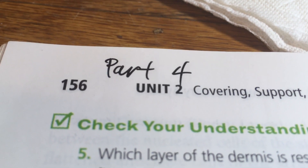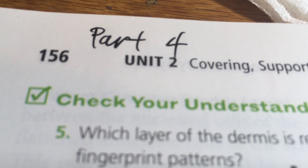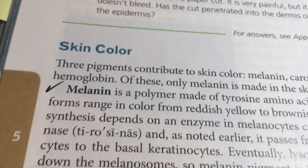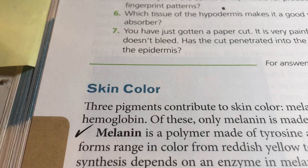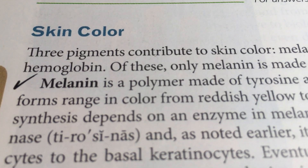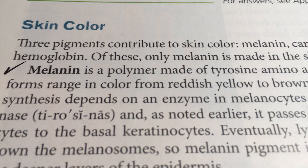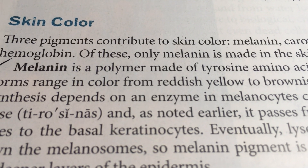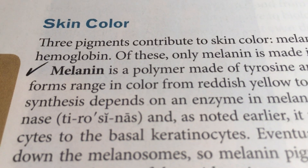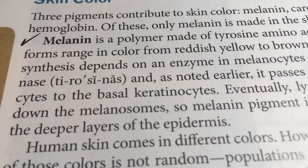Here we are, it's part four and it's page 156. We're continuing on with the integumentary system, the skin, and some of the features of the skin. The next thing we're going to focus on is skin color. Melanin is described as a polymer based on the amino acid tyrosine — it's very easy to make for a very common molecule, and it's the color of everything.